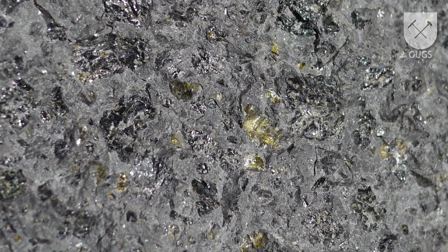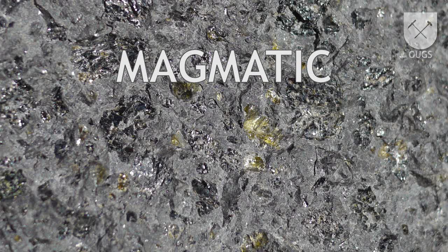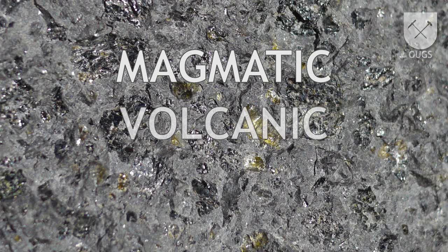Now for our conclusions. The minerals' crystalline shapes show us that they crystallized in magma — it is a magmatic rock. As it has a matrix, we can see that it has been part of a lava flow and thus is volcanic. It is a very dense, dark rock, partly crystallized, so it is a basalt.